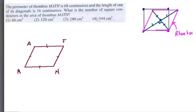We're just told that the perimeter is 68, and we're given then the length of one of the diagonals is 16, so let's say this one right here is 16. What is the number of square centimeters in the area of the rhombus?